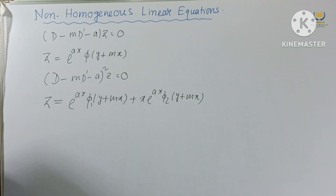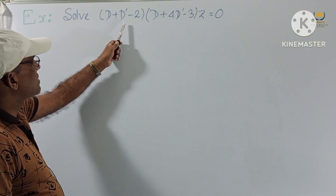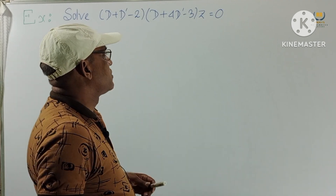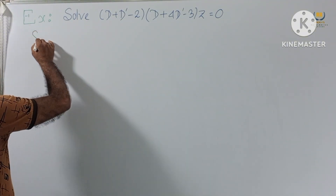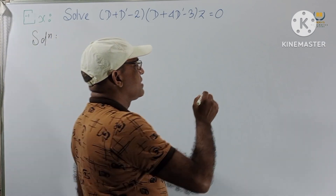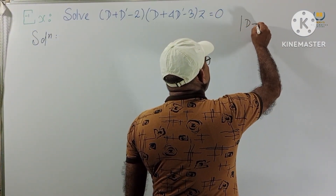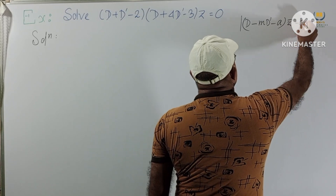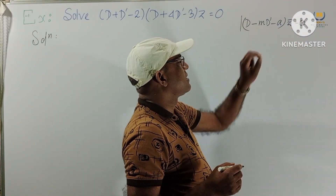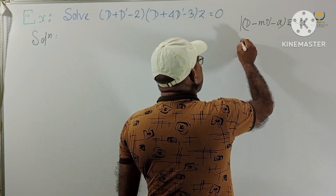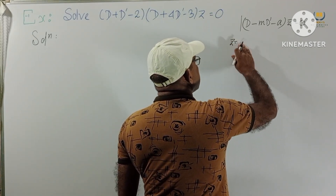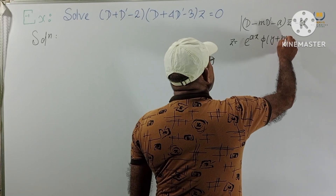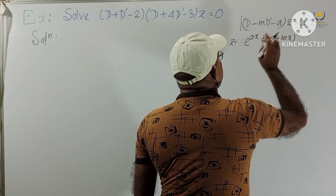Now let us consider some problems. Consider this problem: Solve (D + D' - 2)(D + 4D' - 3)Z = 0. When we get this type of equation, we always express it in the form D(MD' - A)Z = 0. If we get that form, then Z = e^(AX) φ(Y + MX), where M is written with X.